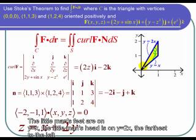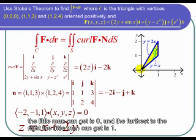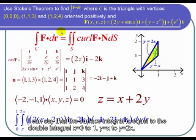So for the double integral, the little man's feet are on y = x. The little man's head is on y = 2x. The farthest to the left the little man can get is 0, and the farthest to the right the little man can get is 1.